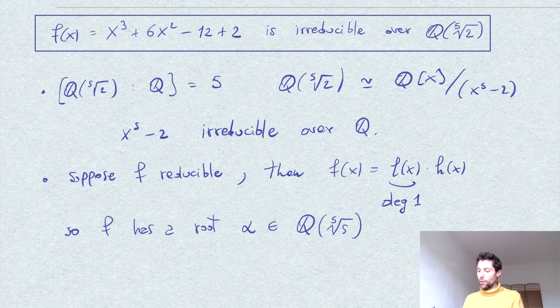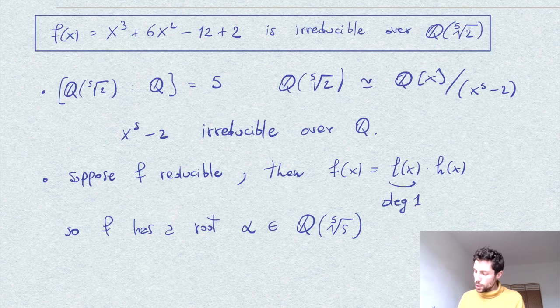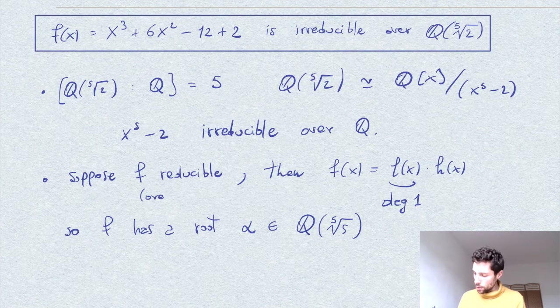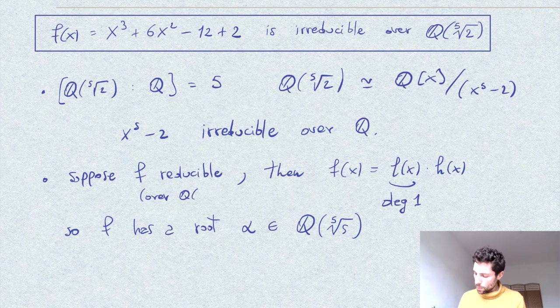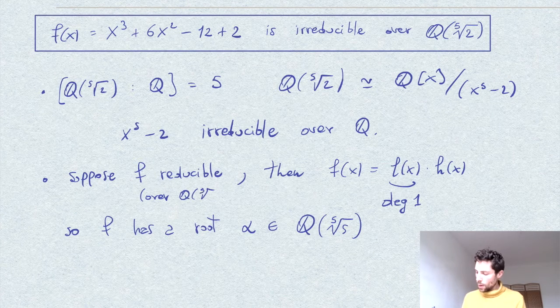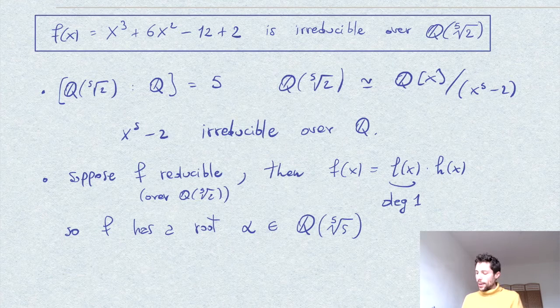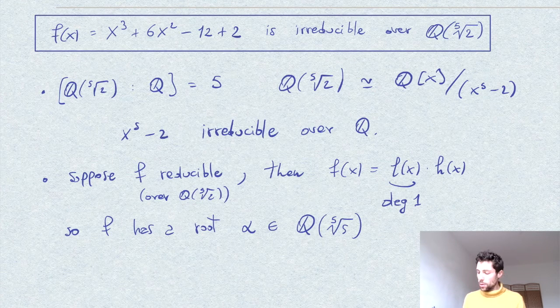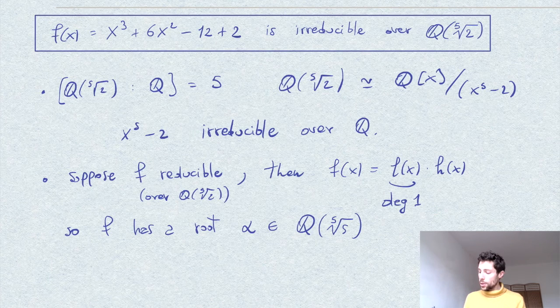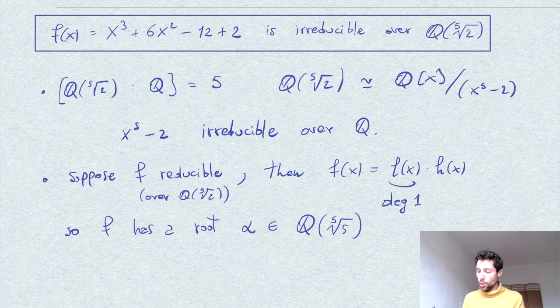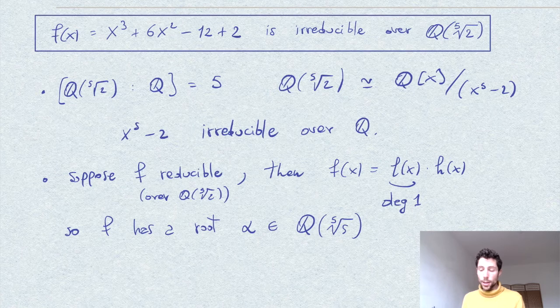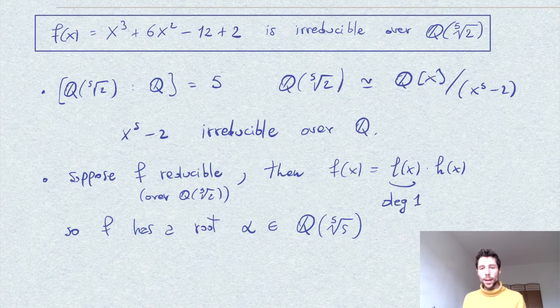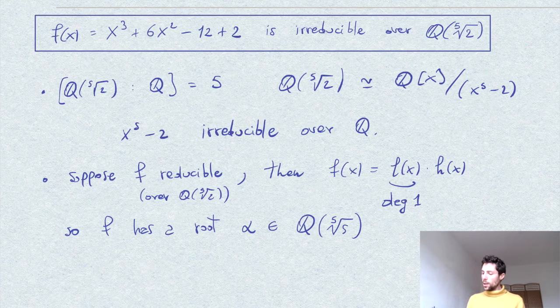We are of course supposing that f is reducible over this extension. And why? I claim that alpha would not be a root in Q because the polynomial f over Q is irreducible, as you can prove by applying Eisenstein's criterion with p equals 2.